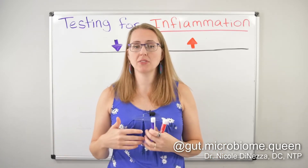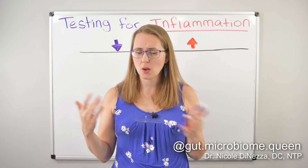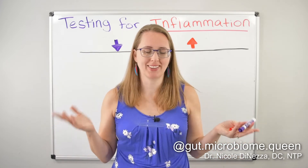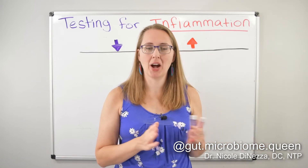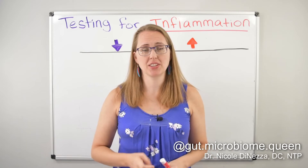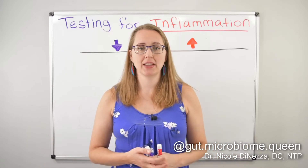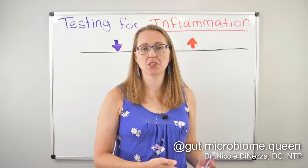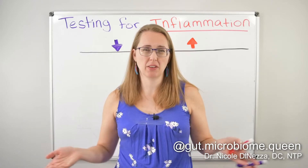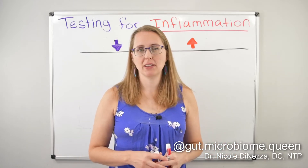All of these should be available through LabCorp or Quest. I'm predominantly going to be using whatever the system is that we use in the States. If you're overseas and use the metric system, you're probably going to have different ranges for these, so you might have to convert. Some of these are much easier or cheaper to run; some are going to be quite a bit more expensive, and you probably wouldn't look at running all of them. If you run just a couple, that'll give you more of a pattern and give you an understanding of what's going on.